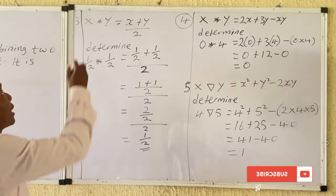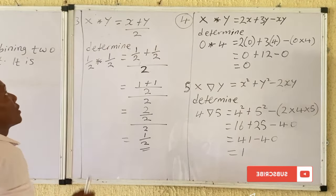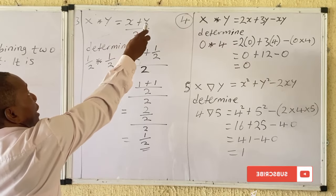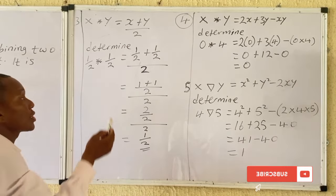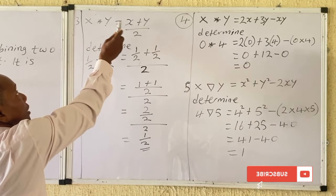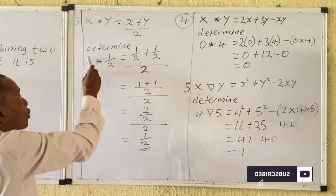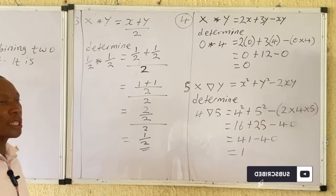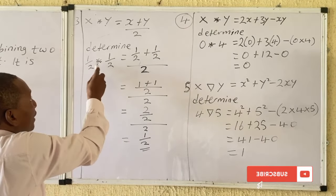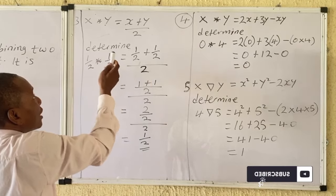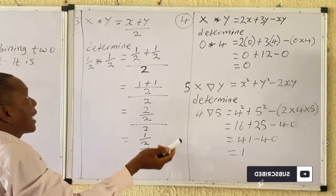Question number three: x★y = (x + y) / 2. Determine (1/2)★(1/2). Using the rule, (1/2)★(1/2) means (1/2 + 1/2) all over 2.